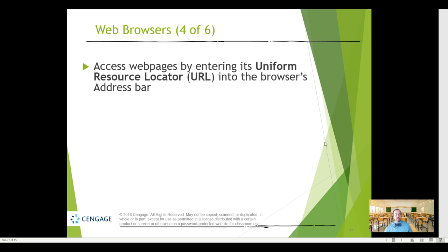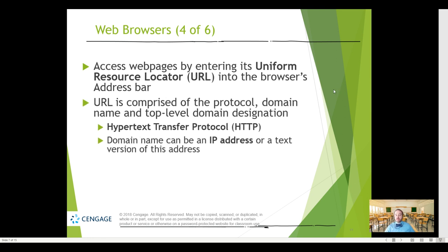When we get to a website in the browser, one key language concept you need to know is that the web address you think of as a web address is called a URL. It's formatted in a very specific way on purpose. A lot of us have gotten into the habit of halfway typing in URLs and letting our browser complete them, or Googling everything instead of typing in the address bar. The URL is formatted as the protocol, the domain name, and the top-level designation. For most of us it'll be HTTP — hypertext transfer protocol — or HTTPS, where the S stands for secure. The domain name can be an IP address or a text version of that address.